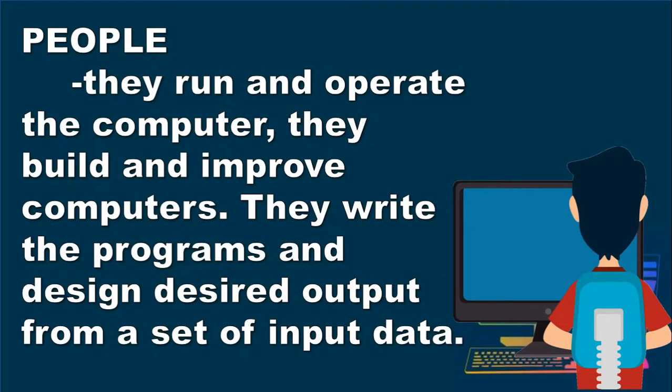Let's start with the first one, the people. People are the most important element of a computer system. They run and operate the computer. They build and improve computers. They write the programs and design desired output from a set of input data.